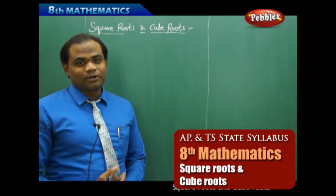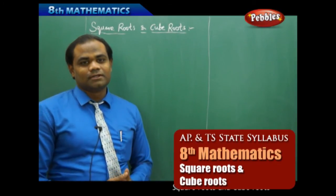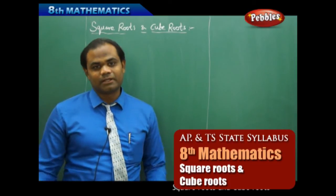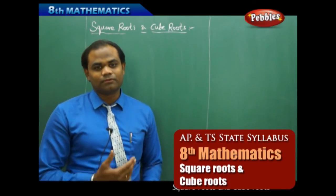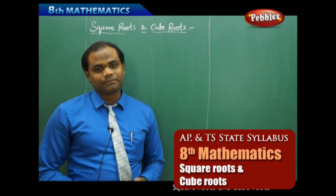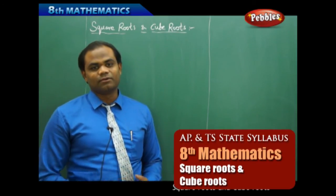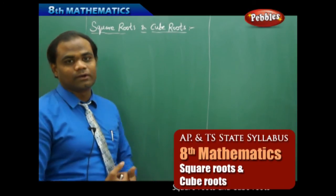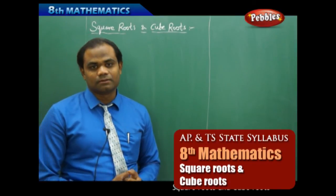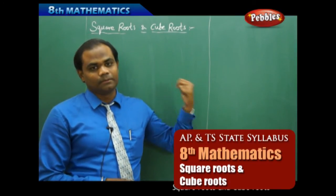We are discussing the topic of square roots and cube roots. We are going to find square roots and cube roots using various different methods, but before that we will try to know what square numbers and cube numbers are. These are the different types of numbers we need to identify before we go to finding the square root. Let's start with perfect squares and square numbers as the initial topic.